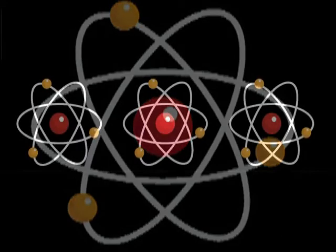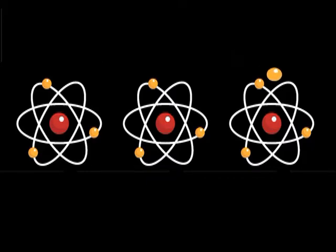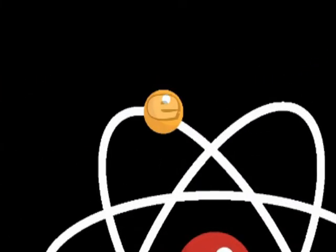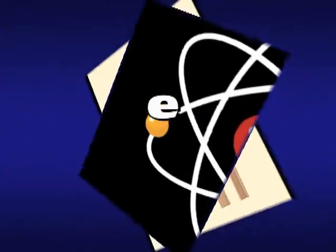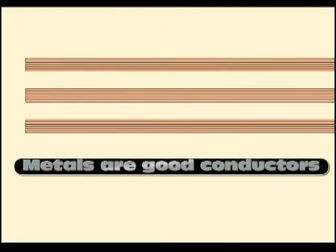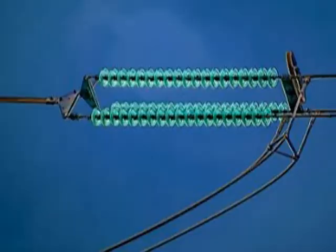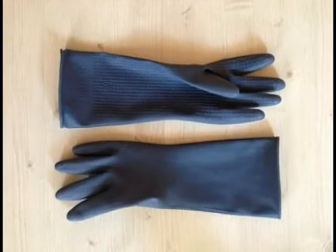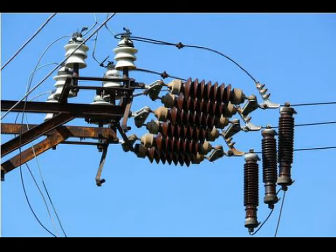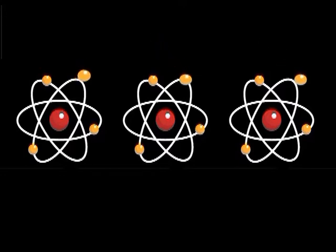Negative charges jump from one atom to another when an electric current goes through a conductor. These tiny negative particles are called electrons. Metals allow the negative charges in their atoms to move very easily from one atom to another — these materials are called conductors. Other materials such as glass, plastic, and rubber do not easily allow their negative charges to move, and are called insulators.